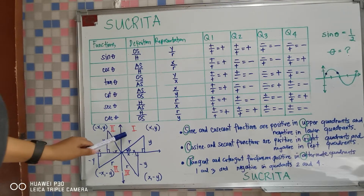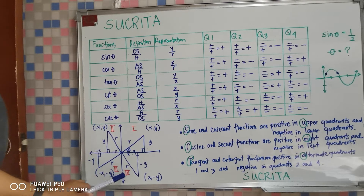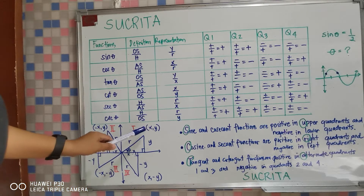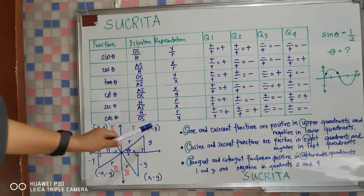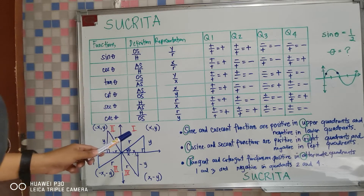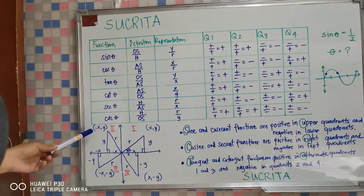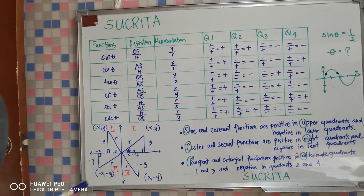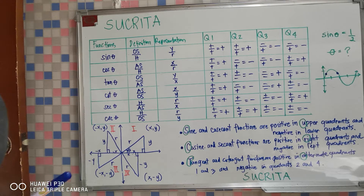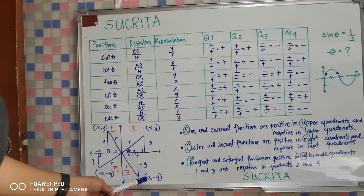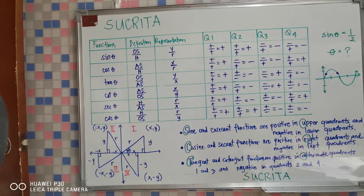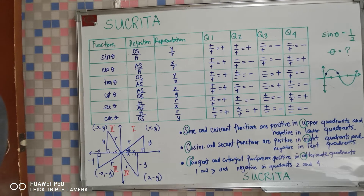Notice that the signs of x and y in quadrant 1 are all positive, and R is always positive. In quadrant 2, x is negative, y is positive, and R is positive. In quadrant 3, x is negative, y is also negative, and R is positive. In quadrant 4, x is positive, y is negative, and R is also positive.